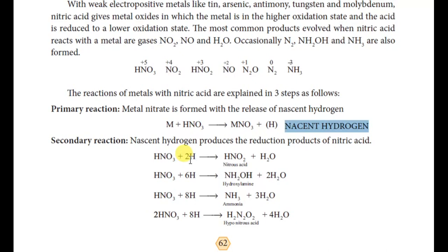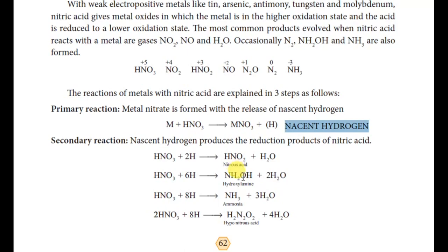You balance the hydrogen with nitric acid and water. The possible secondary products include hydroxylamine, nitrogen gas with water, and ammonia plus water. The zero-valent hydrogen reacts with nitric acid first, and the secondary reaction results in further reduction. So the secondary products are: nitrous acid, hydroxylamine, ammonia, and hyponitrous acid.